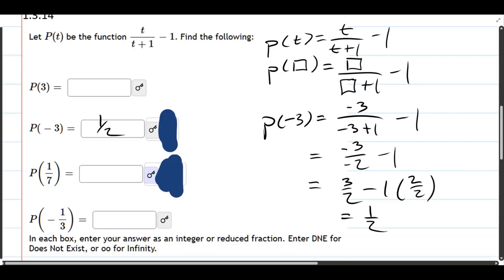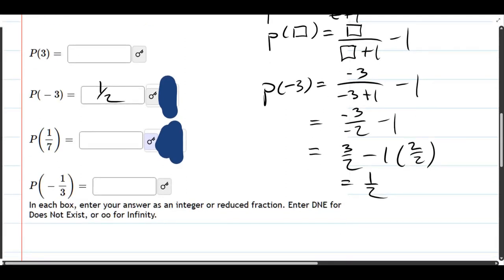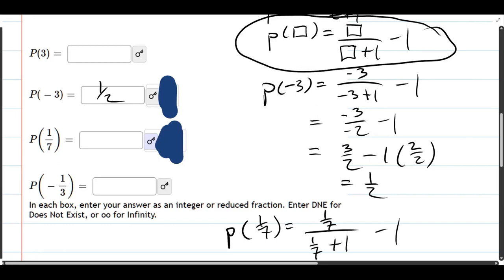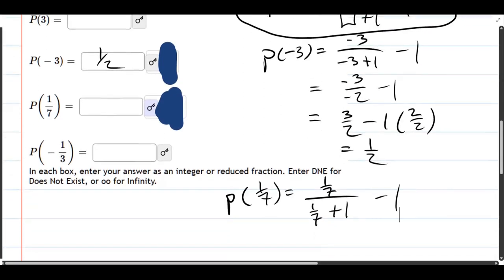Now for the 1/7th. So this is a little trickier. I am looking at the version I just circled there. So P of 1/7th: I have 1/7th over 1/7th plus 1 minus 1. All right, so I just put 1/7th in the box, all three boxes.